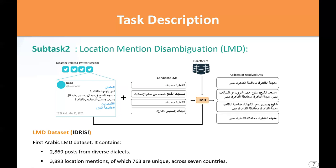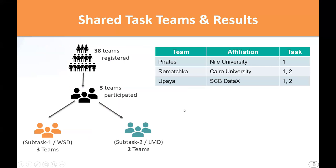The dataset was split into 70% for training, 10% for development, and 20% for testing. This was to ensure a fair evaluation across different disaster types and geographical areas. We received 38 registrations. Out of these, only three teams managed to submit to the final evaluation phase — three for the WSD task and two for the LMD subtask.